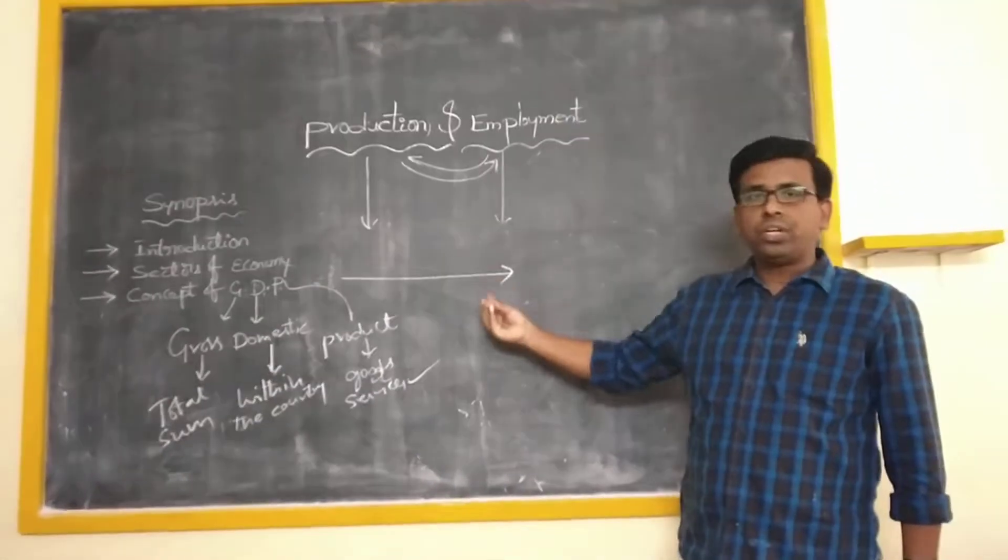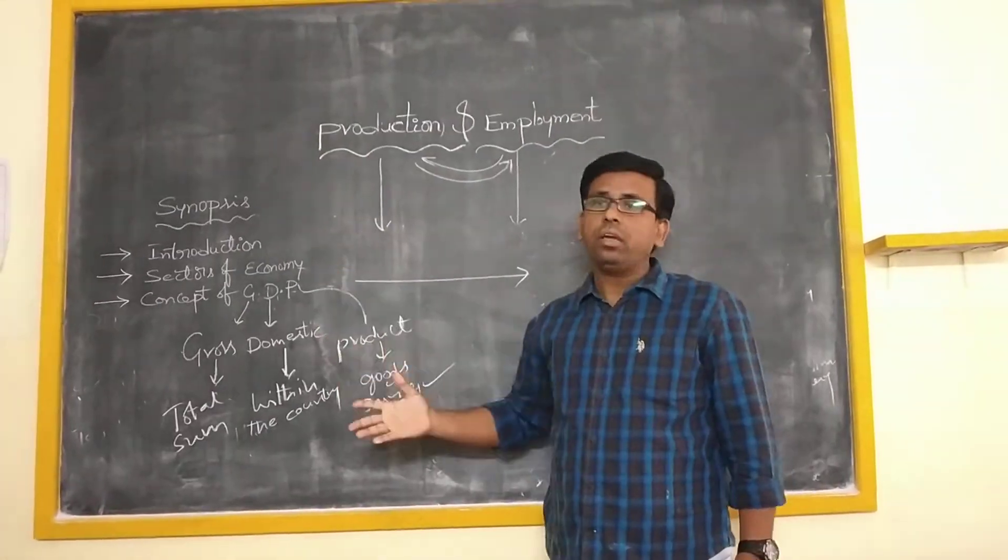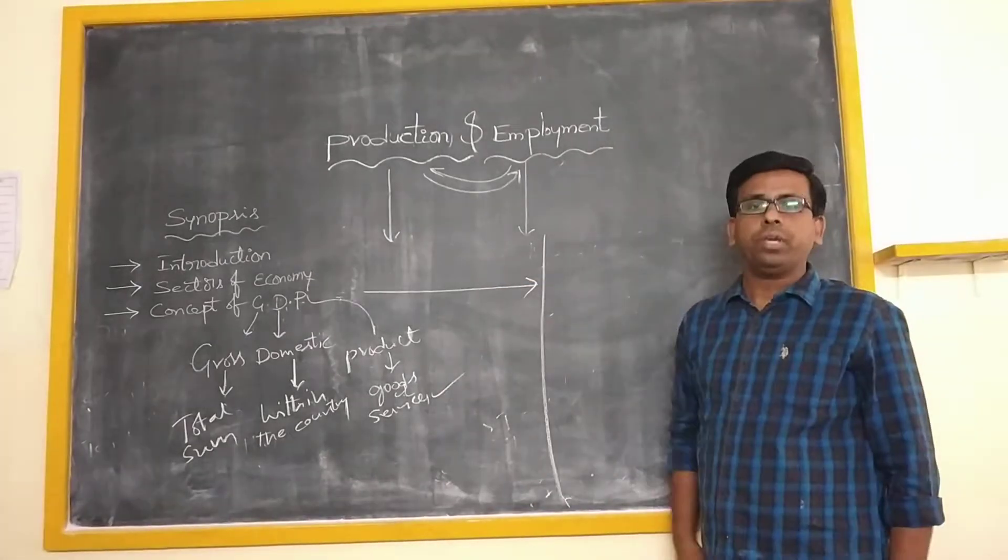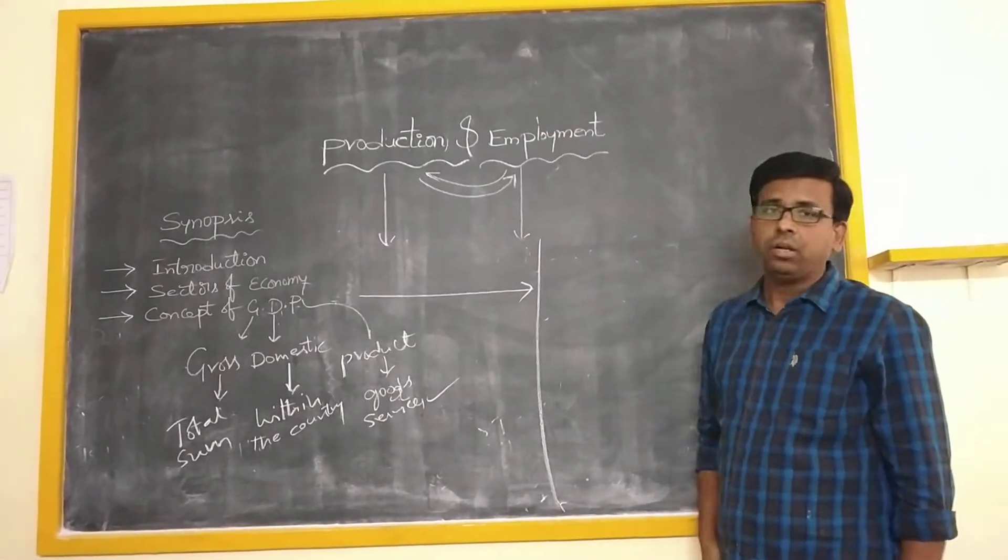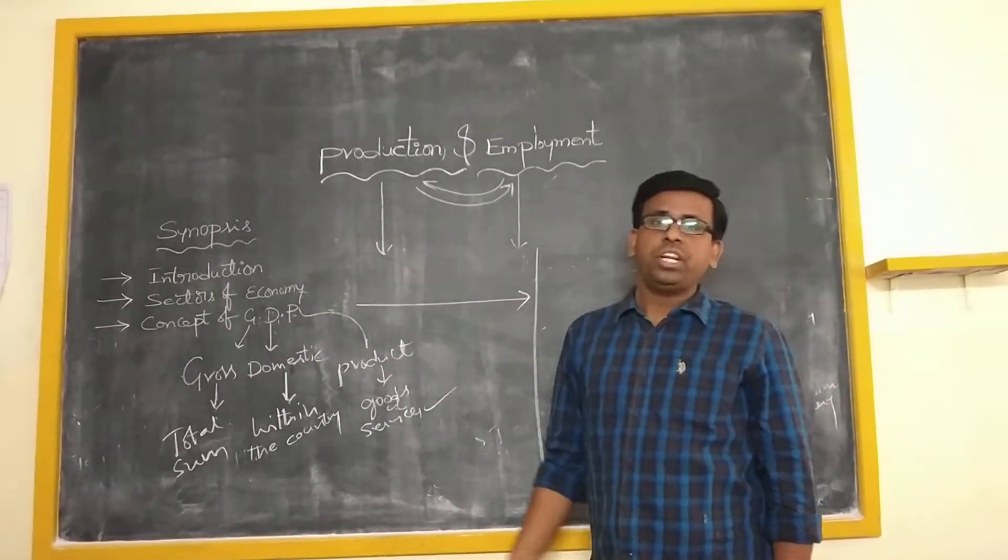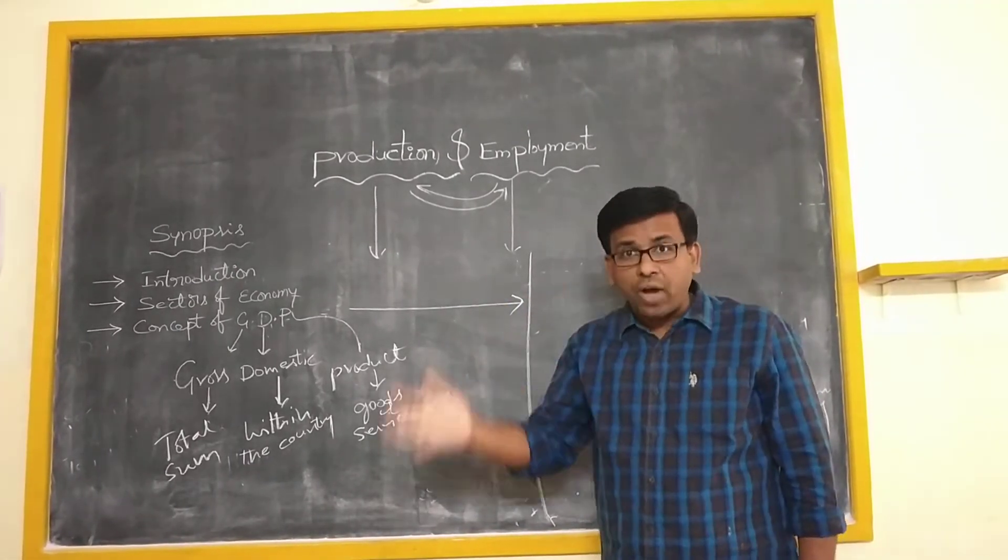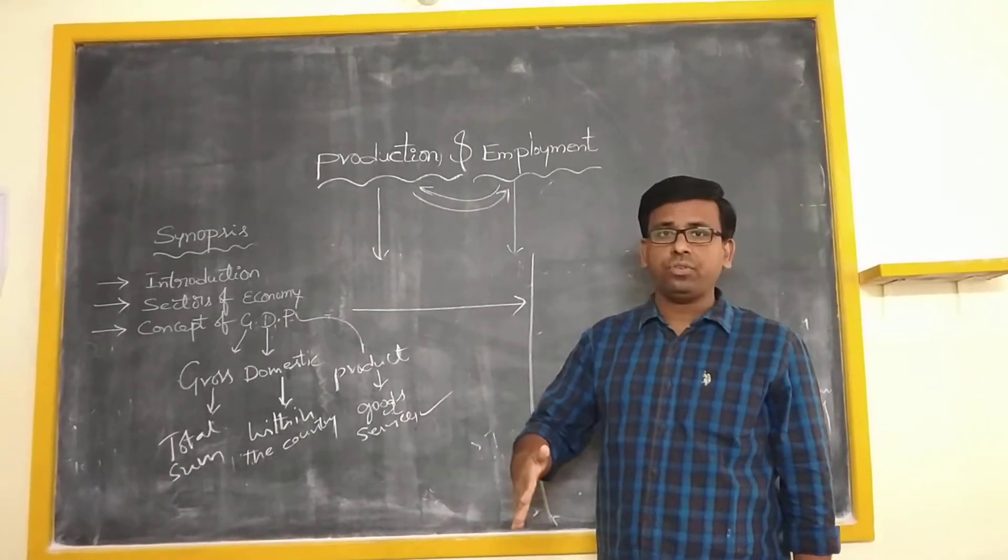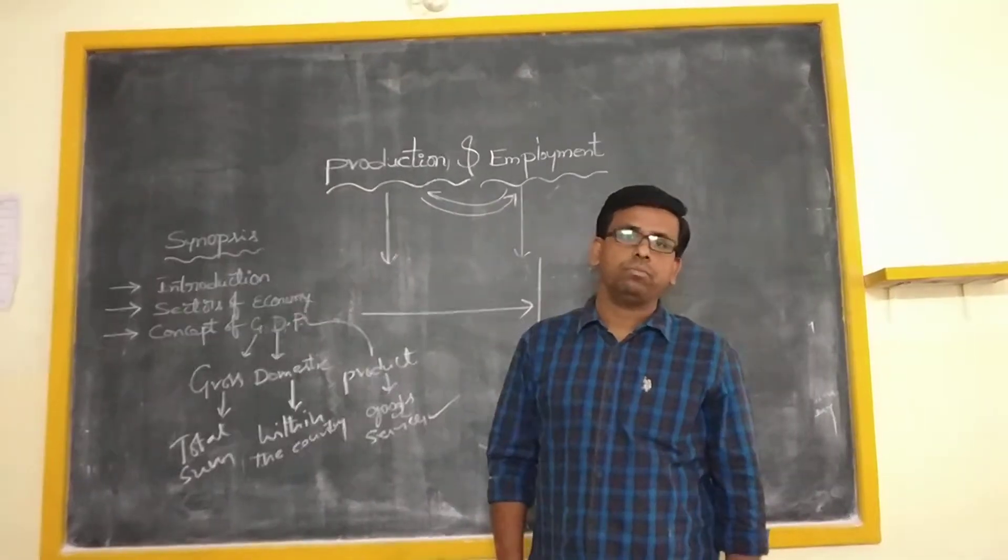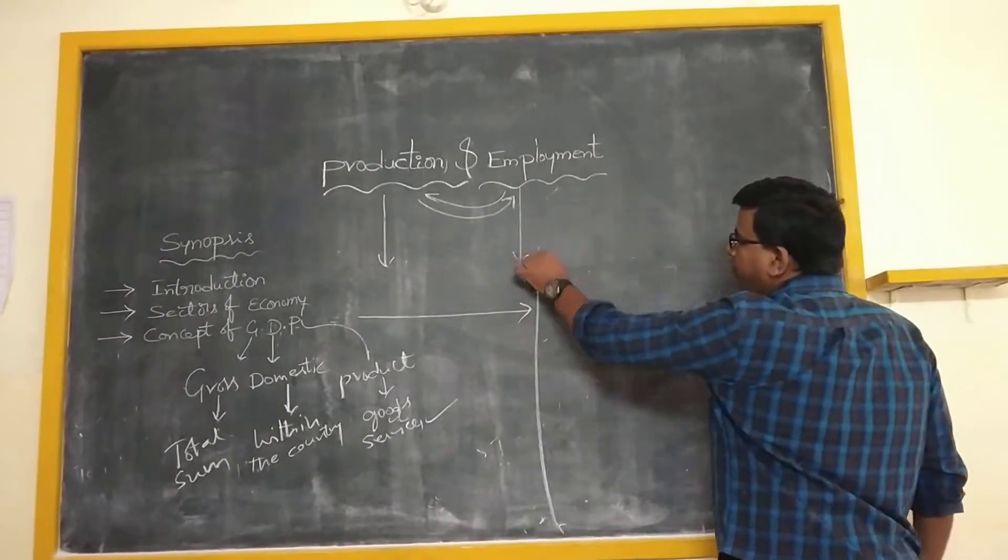Students, now a few terms related to this concept of GDP to understand it in a better way. What are those terms which are related to this GDP? As I mentioned, if you remember, I have given a definition for this GDP. GDP is nothing but the total market value of all the final goods and services produced within the country in a given one year period of time. Here if you observe, I use final goods.